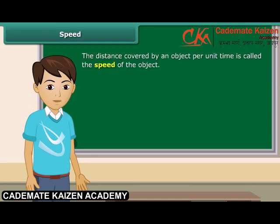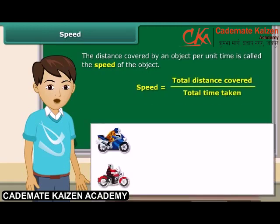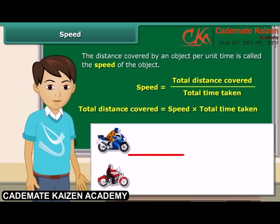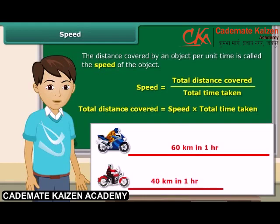The distance covered by an object per unit time is called the speed of the object. Suppose your brother claims that his motorbike is faster than his friend's. His friend denies. Your brother's motorbike covers a distance of 60 km in an hour, whereas his friend's bike covers 40 km in one hour. The speed of your brother's bike is 60 km per hour and that of his friend's bike is 40 km per hour. Your brother's bike is certainly faster because its speed is greater.